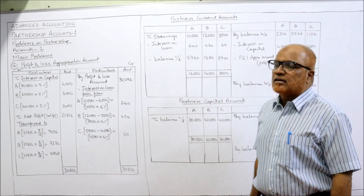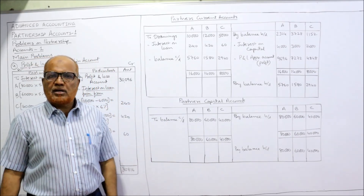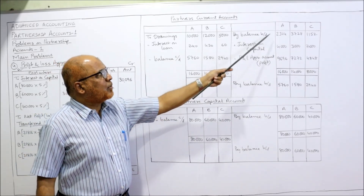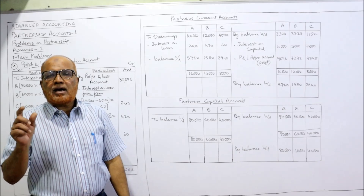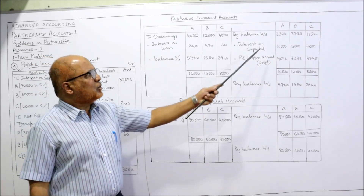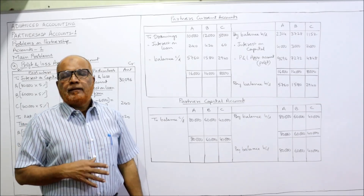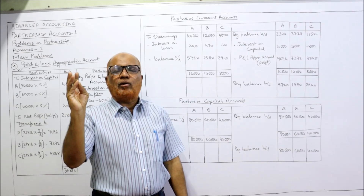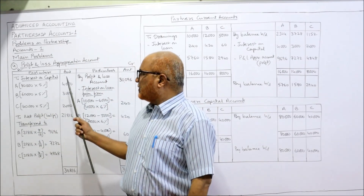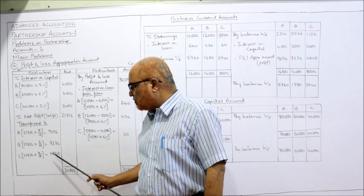Now we proceed to calculate the partners' current accounts. Three partners, so three columns on the debit side and three columns on the credit side — A, B, C. By balance brought down: 2,304 for A, 3,728 for B, 1,152 for C. These current account balances at the beginning of the year are all credit balances. On the credit side, partners receive interest on capital: 4,000, 3,000, 2,000. And share of profit: 9,696, 7,272, 4,848.